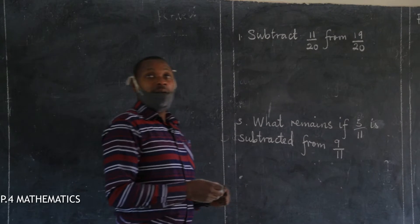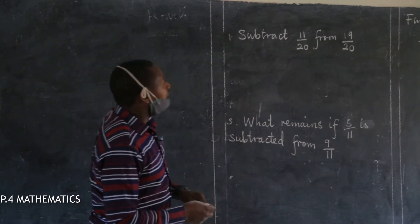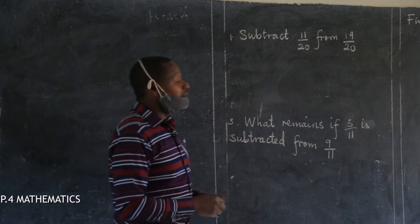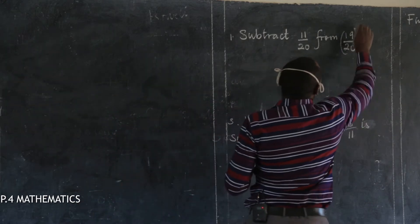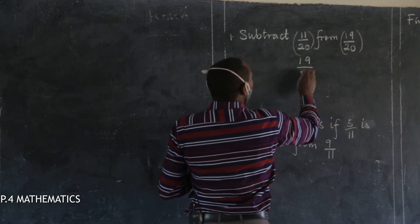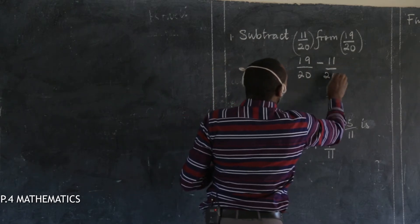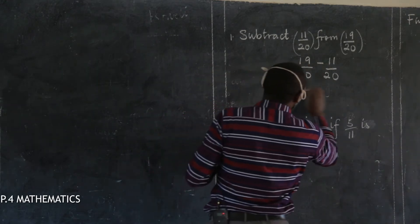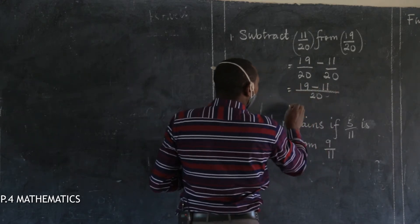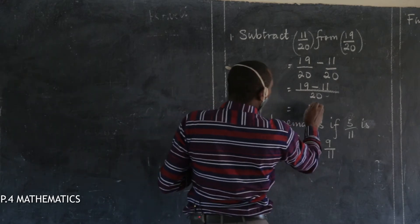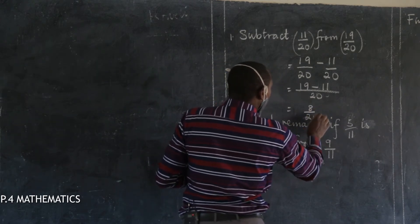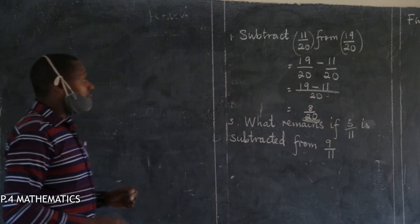When you look at the numbers that were given in the activity, the first one where we had to subtract 11 twentieths from 19 twentieths. Whereby we said please get the bigger fraction, take away the smaller one. So you take 19 twentieths minus 11 twentieths. Keep the common denominator 20 and you have 19 take away 11. This will give you 19 minus 11. What do you get? Somebody saying 8 out of 20. Did you get that on the first question?